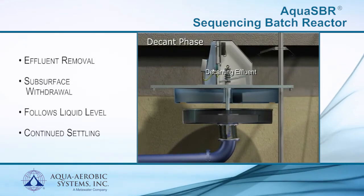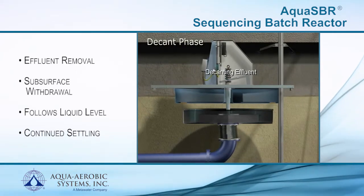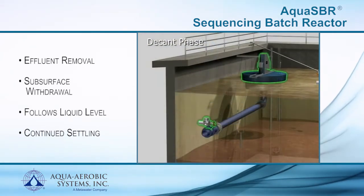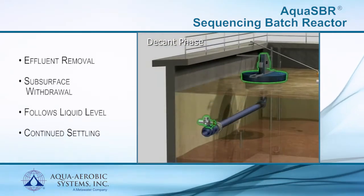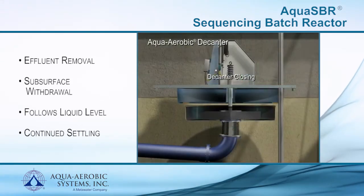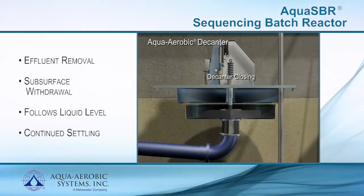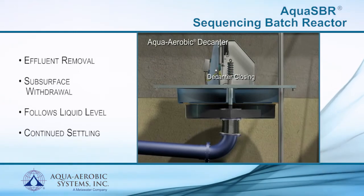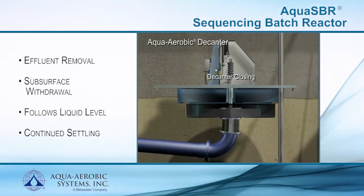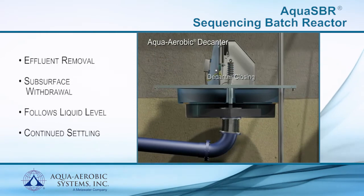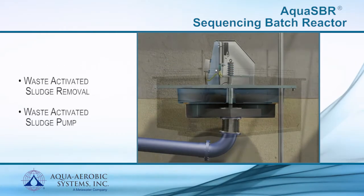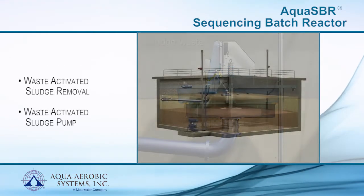Among its many features, the decanter floats and adjusts to varying water levels, assuring that only the highest quality effluent is being removed. The decanter closes when level indicators determine a low water level set point has been reached. The discharge valve closes and the weir seals against the float, preventing any solids from entering the decanter during non-decant phases.